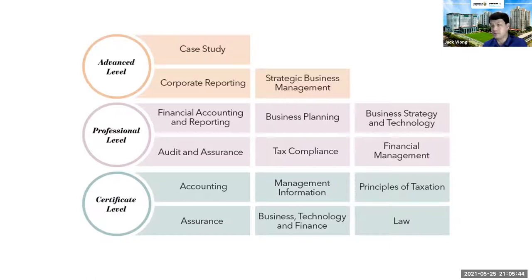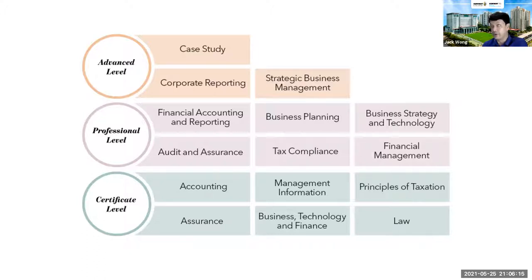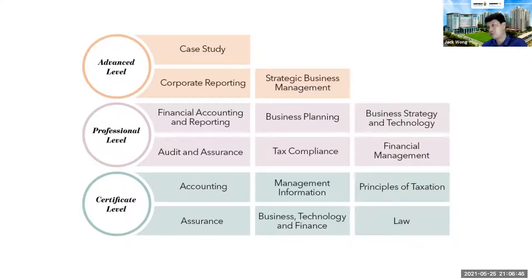If you are already in your fourth year, the maximum exemptions would be up to eight papers — you'd still need to take financial accounting and reporting, audit and assurance, business planning, and tax compliance, as these are based on UK standards. If you're in second year moving into third, you could get exemptions for all 12 papers and go straight into corporate reporting, strategic business management, and the case study.